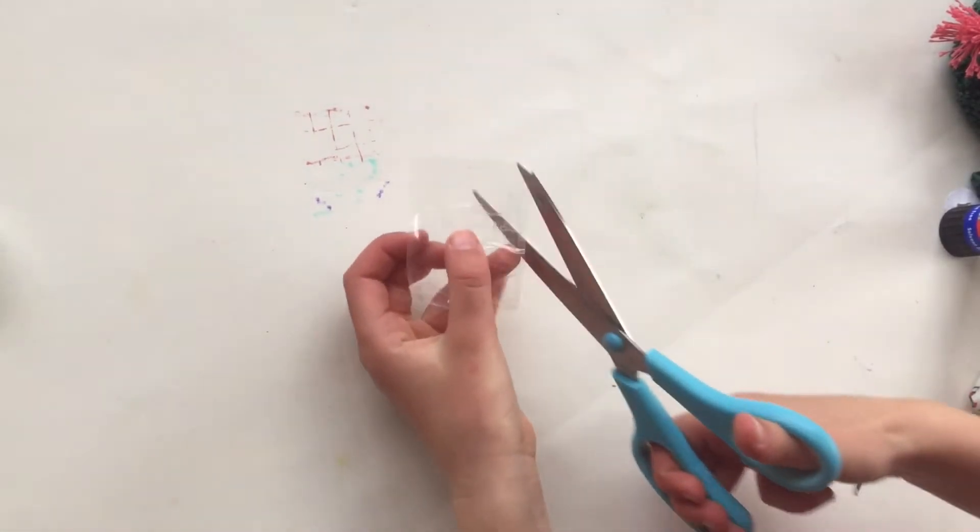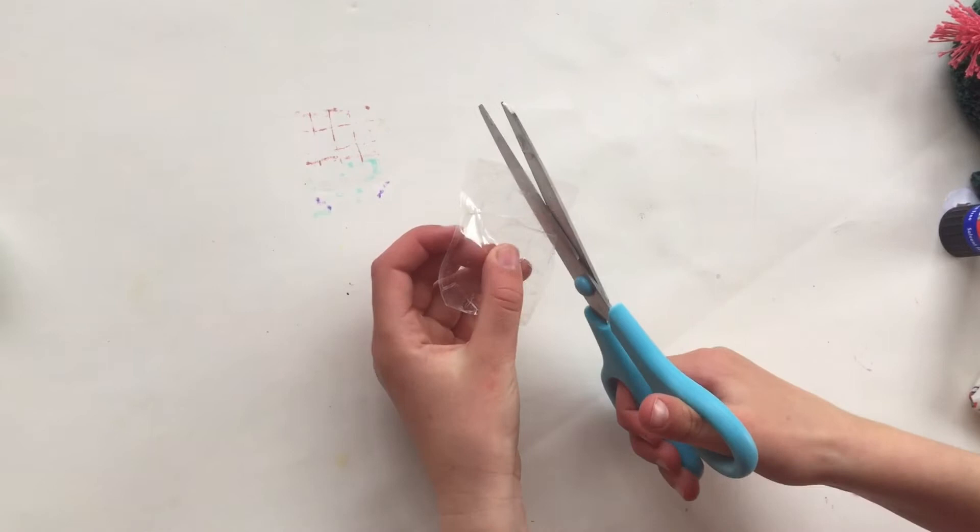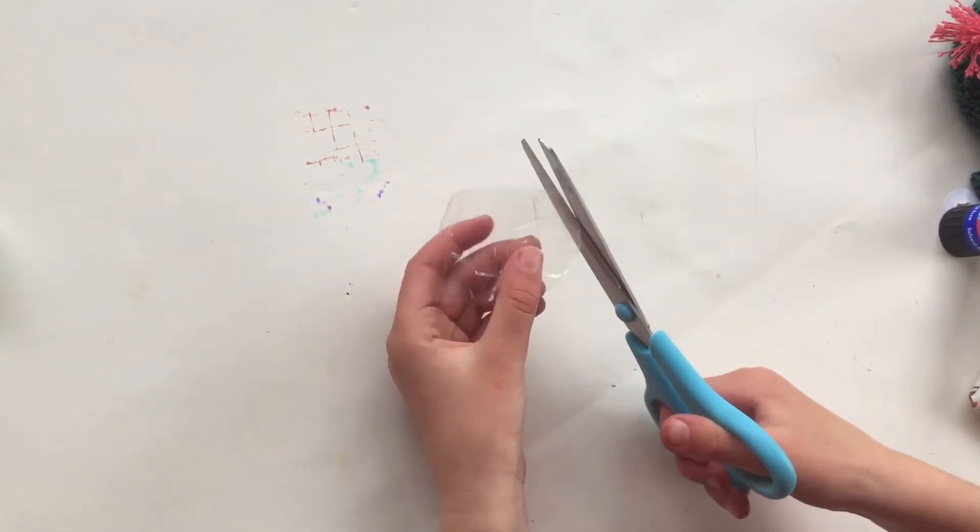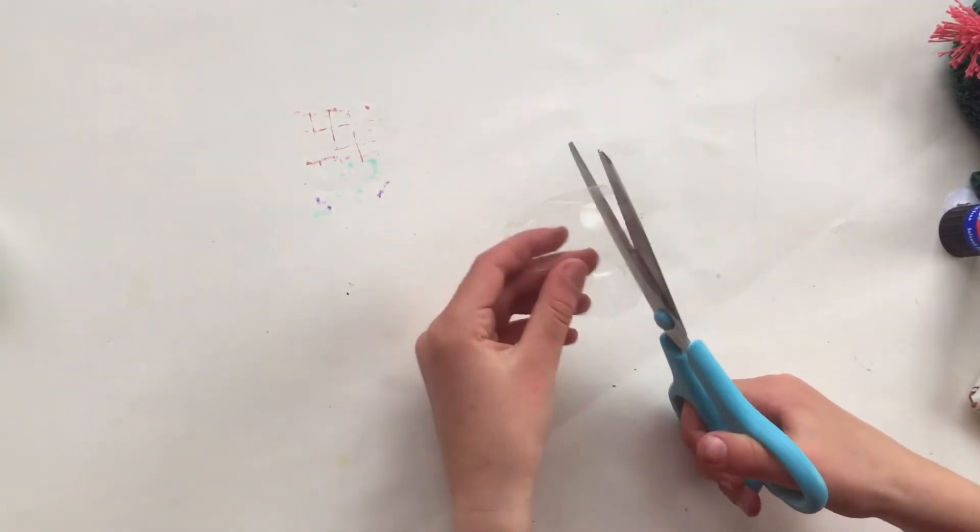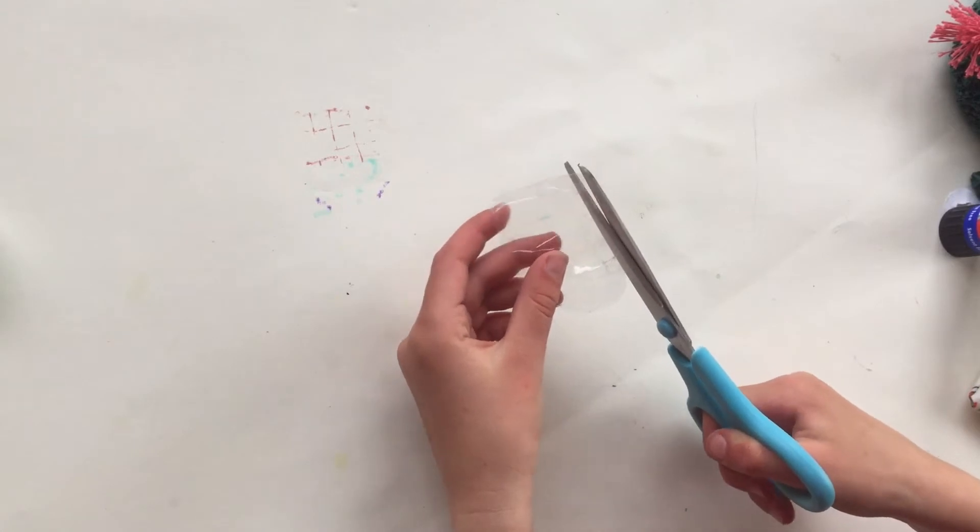Now you need to cut a circle out from the tape. This is going to be your simple dimple shape, so try and make it quite a big circle.